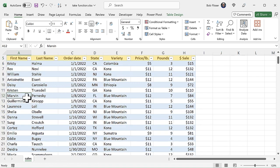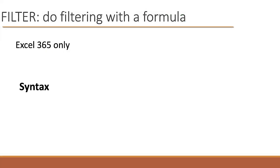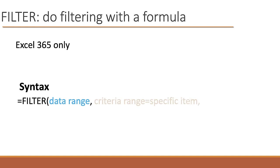This is where the FILTER function comes into play. Before we use it, let's look at the syntax. We say equals FILTER, open parenthesis. The first argument is the data range — that entire table. The second argument is a little different from most Excel functions: rather than just a comma, we say criteria_range equals, and then we literally type in the value we want. The third argument is optional — what to put in if there is no result. So if we put in New Jersey and it doesn't find it, we can put in our own custom error message like "not found."